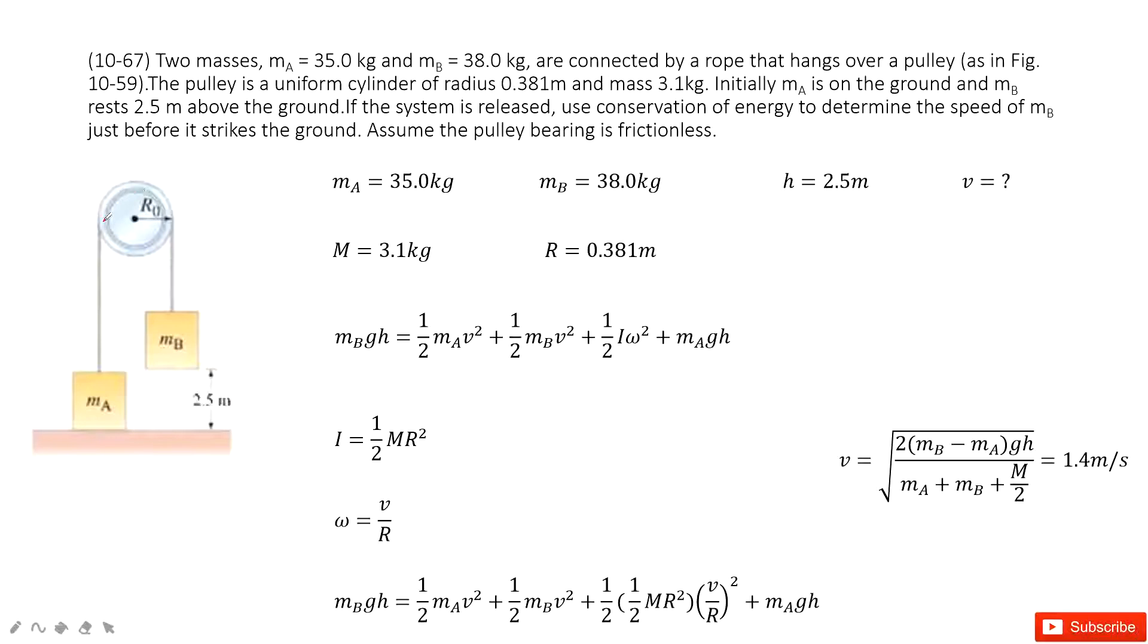And then we also have the mass for this pulley and the radius. We need to find the speed, the v of mb, really just before it hits the ground. And there we consider the pulley as frictionless.